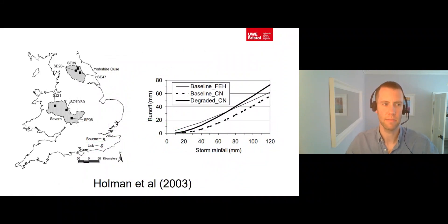Research by Holman et al. in 2003 explored how soil degradation due to agriculture contributed to the 2000 floods in England and Wales. Their research within the Yorkshire Ouse, Severn, Bourne and Uck catchments showed that runoff rates following the application of intensive agriculture practices, this solid line, were higher than those without their application, so without intensive agriculture practices, which is shown by this dashed line.